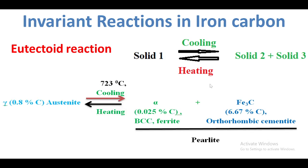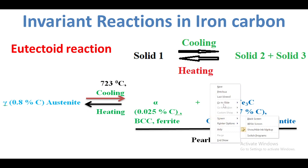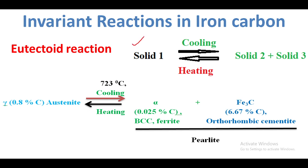Another reaction is the eutectoid reaction. In this eutectoid reaction, one solid is converted to two solids. The first solid is austenite. When austenite is cooled to 720 degrees Celsius — this is the critical temperature of 720 degrees Celsius — one solid with 0.8 percentage of carbon content, when cooled, gives alpha ferrite plus cementite.